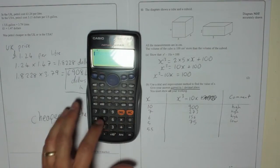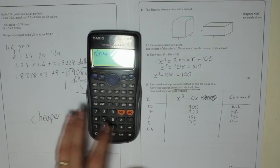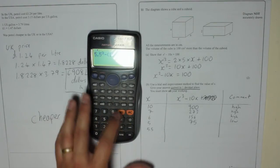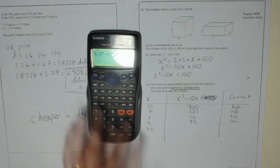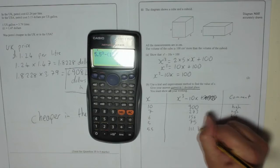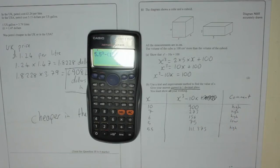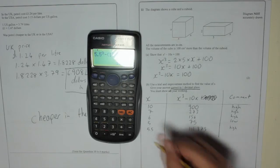So 5.5 cubed minus 10 times 5.5. Which is 111.375. High again. It's only a bit too high though. I'll try 5.4.